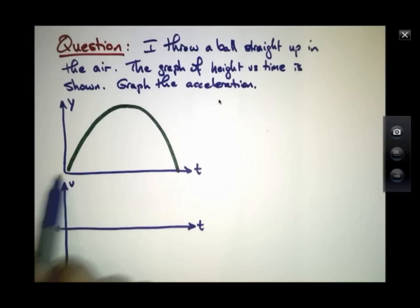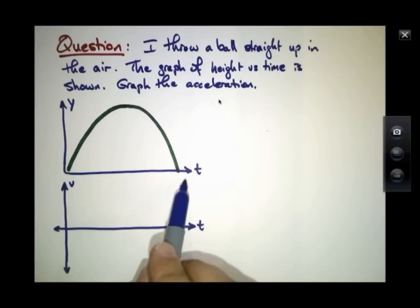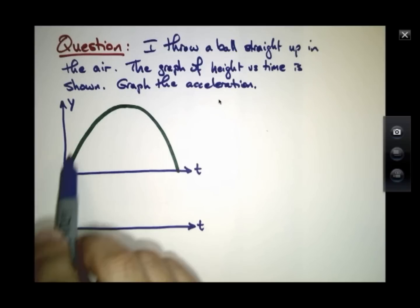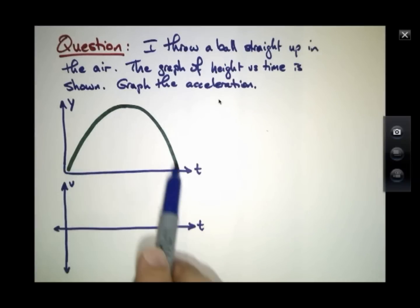I'm going to throw it straight up. This graph shows simply the height of this ball as it goes up in the air and comes back down again. It looks like a parabola, but that's only because the horizontal axis is time, and it's not that I'm throwing it across the room. It's just that the ball is going up in the air in time and then coming back down in time.